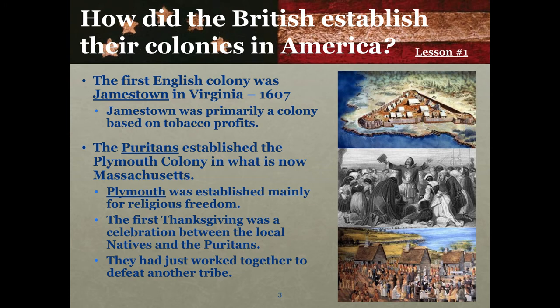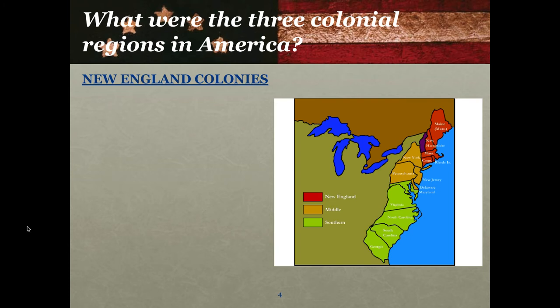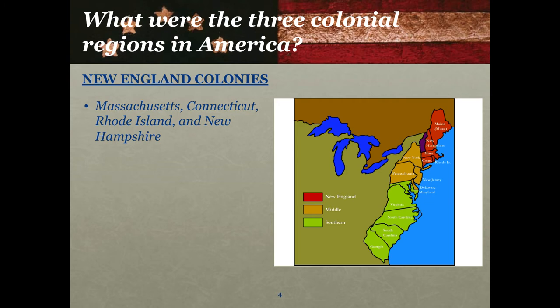Our next left side question is: what were the three colonial regions in America? We are fast-forwarding in time. Plymouth and Jamestown have been established, and over time many other colonial settlements were established, forming what became the 13 colonies. Those colonies became their own regions with distinct identities. Starting with the New England colonies, which consisted of Massachusetts, Connecticut, Rhode Island, and New Hampshire. They did not include Vermont — back then there was no Vermont.